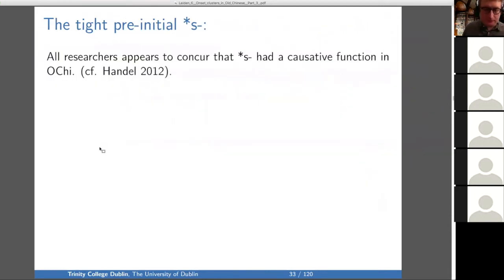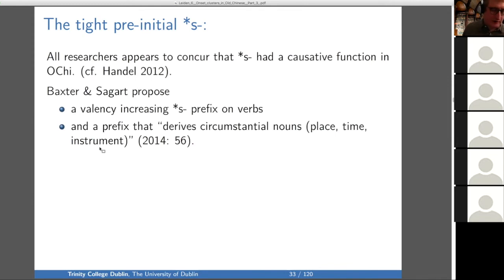First, tight pre-initial, now for morphological reasons. All researchers appear to concur that S had a causative function in Old Chinese. Baxter and Sagart propose this causative function, valence increasing on verbs, and they also have a prefix that derives circumstantial nouns—nouns of place, time, or instrument from verbs using this S prefix.